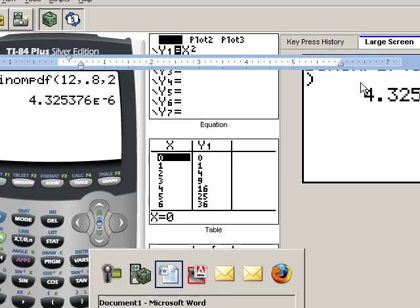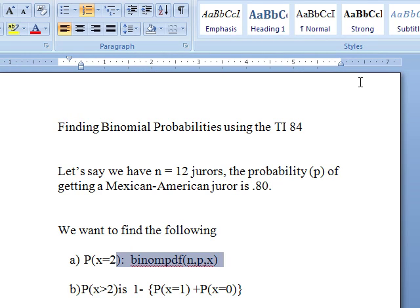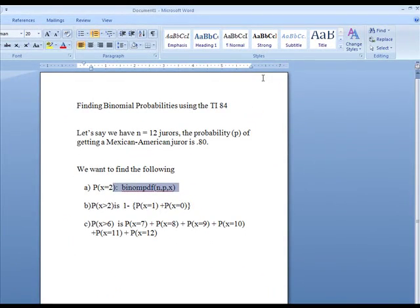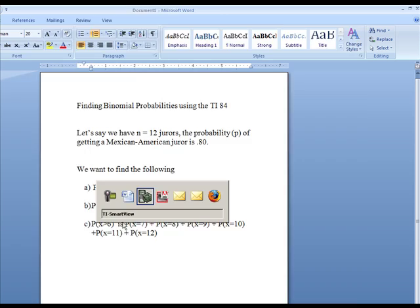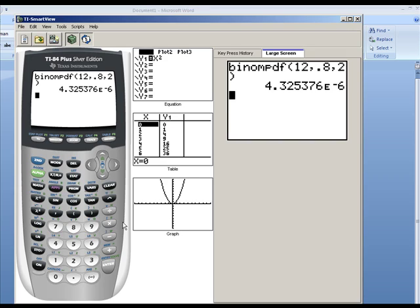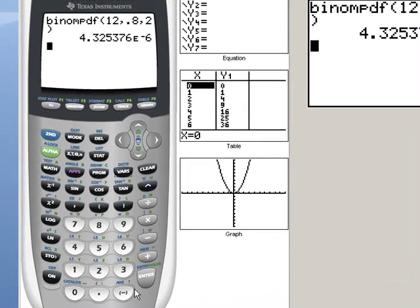Let's go back now and look at the problem where now we're looking at more than two jurors. So in this scenario, what we're going to be looking for is X equaling 1 and X equaling 0, and we'll sum those two together and subtract that from 1. So now we're going to find, I'm going to go back over there, and we'll use a function called second entry, because that will pull back up the binompdf.